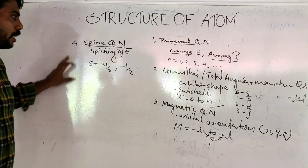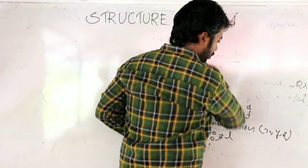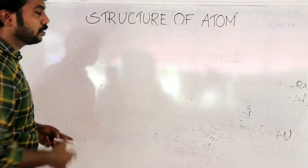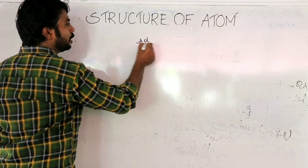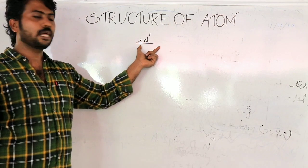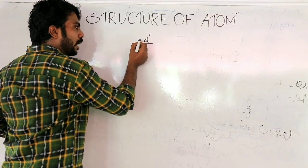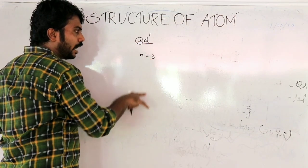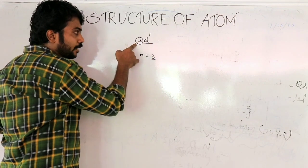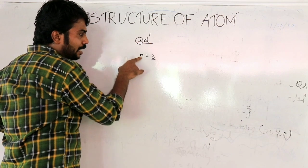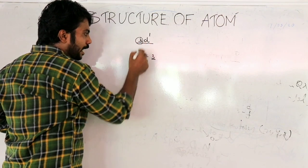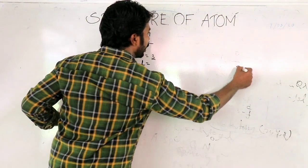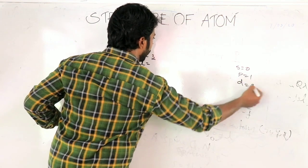Let us take the example 3d1. In 3d, there are four quantum numbers. Here n is equal to 3, which is the Principal quantum number. D corresponds to L equal to 2. Remember: s equals 0, p equals 1, d equals 2, and f equals 3.